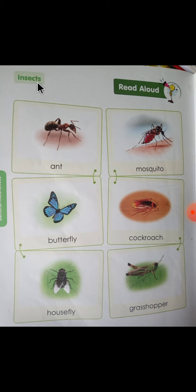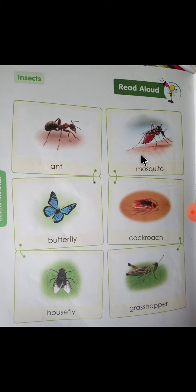Insect — I-N-S-E-C-T-S. Insect means कीड़े (insects). Insect name — कीड़े किसको कहते हैं? जिसके six legs होते हैं, वो है Insect. How many legs? Six.